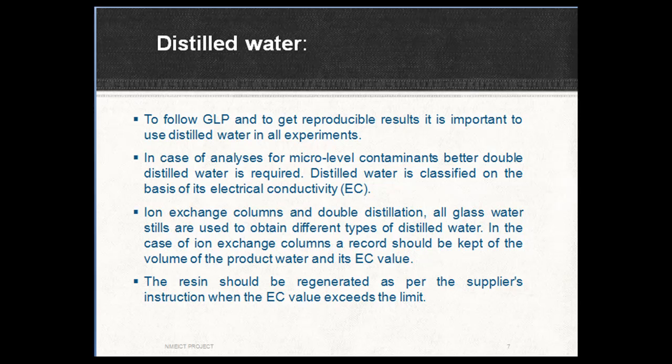To follow GLP and to get reproducible results, it is important to use distilled water in all experiments. In the case of analysis for micro-level contaminants, double-distilled water is required. Distilled water is classified on the basis of its electrical conductivity. Ion exchange columns and double-distillation glass stills are used to obtain different types of distilled water. In the case of ion exchange columns, a record should be kept of the volume of product water and EC value. The resin should be regenerated as per the supplier's instructions.